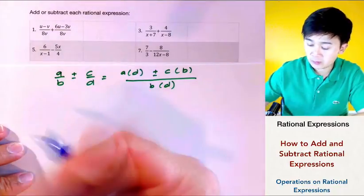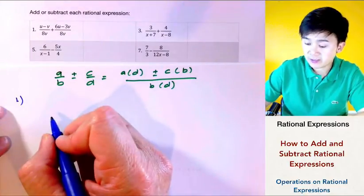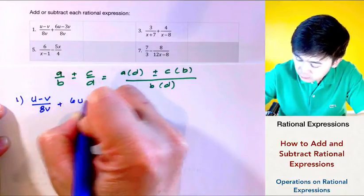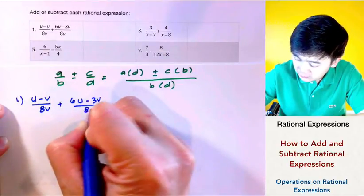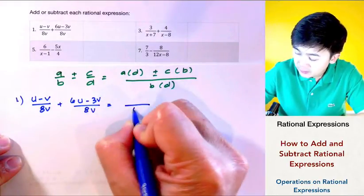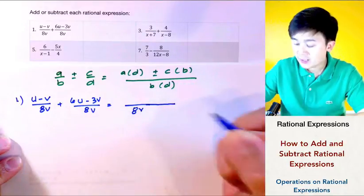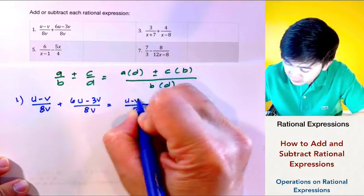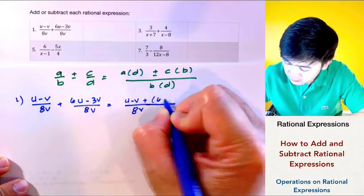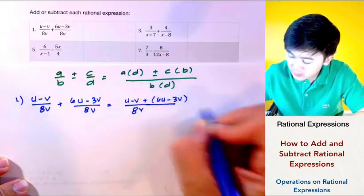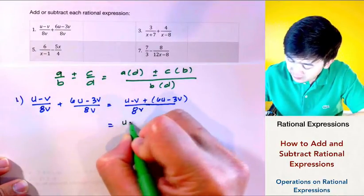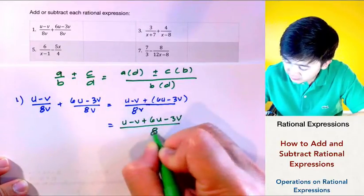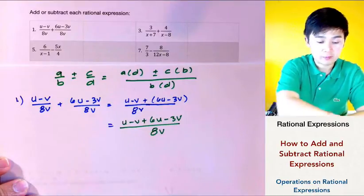For problem number one, we don't need to worry about using the formula because the denominators are the same. So if we have U minus V all over 8V plus 6U minus 3V all over 8V, we simply copy the denominator and combine the numerators. So we have U minus V plus 6U minus 3V all over 8V.